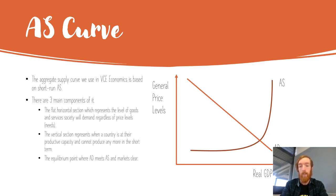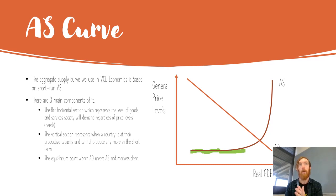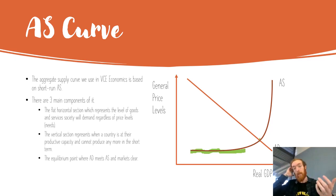With this curve there are three main components. The first section is relatively flat and horizontal — that represents a level of production that's going to occur no matter what. At a certain price level, there will always be a certain level of goods and services produced because there are needs being satisfied. No matter how bad the economy gets, there is always a certain amount we are going to demand businesses to produce to satisfy our basic needs.